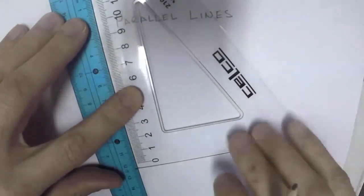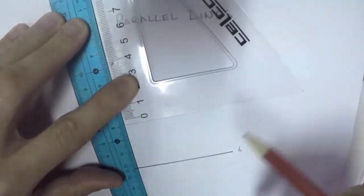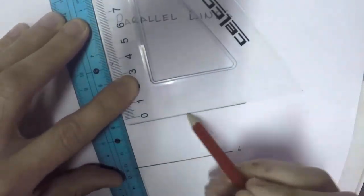We then need to get our ruler and put it right next to the set square and then move the set square up. Now that line that you draw now will be parallel to the previous line.